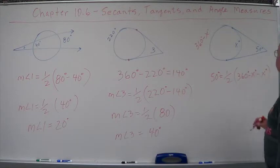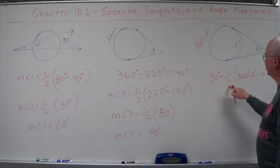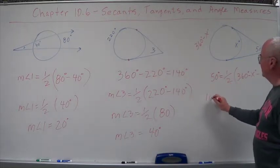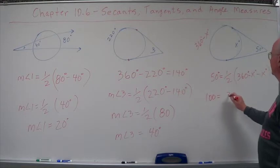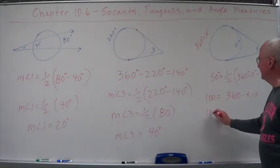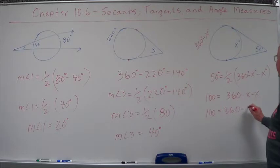Did we do that right? Yeah. Take the first angle, the large angle, large arc minus the small arc. So let's do this. Let's get rid of this and multiply by two to both sides. When we multiply by two, we get 100 equals 360 minus x minus x. Let's consolidate some things. 100 equals 360 minus 2x.